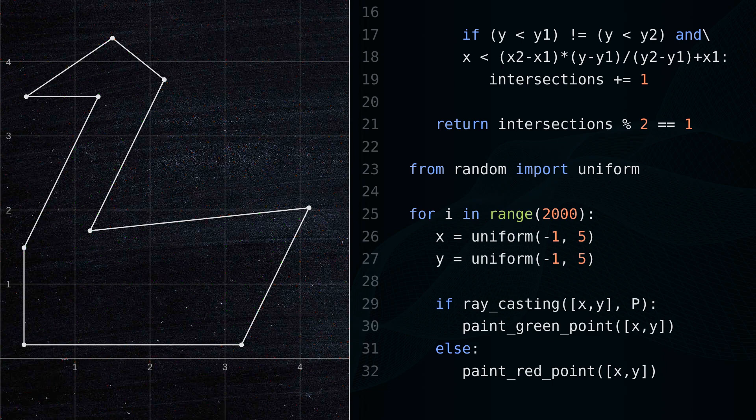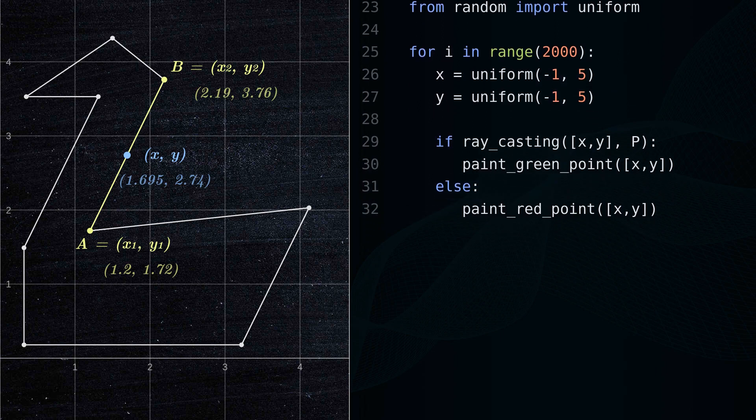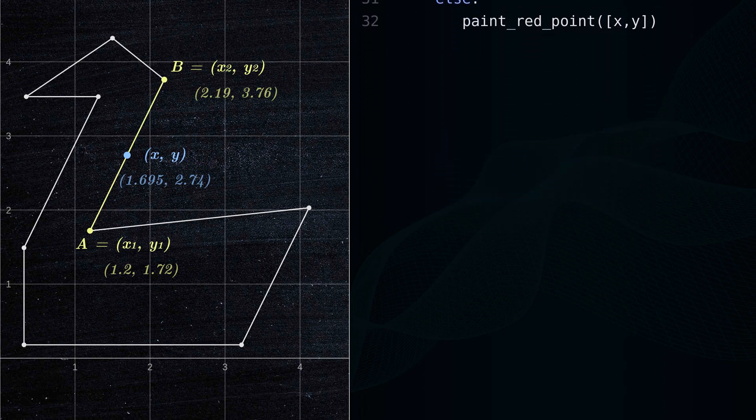We should also consider the case in which the point lies on a side of the polygon. To do this, we can use the following code.